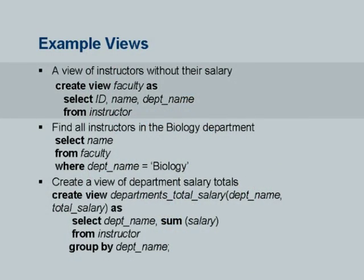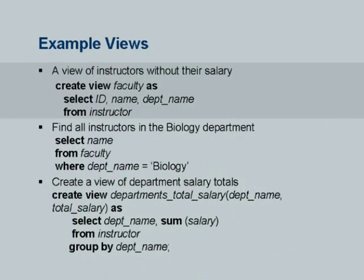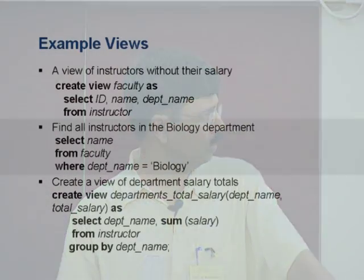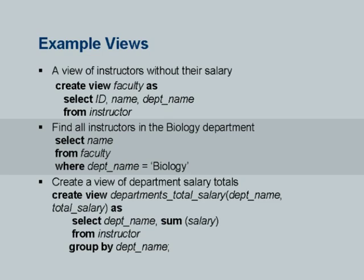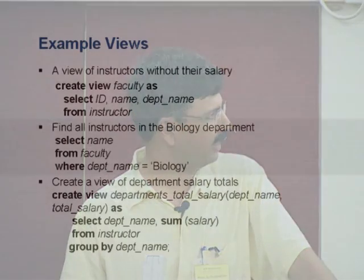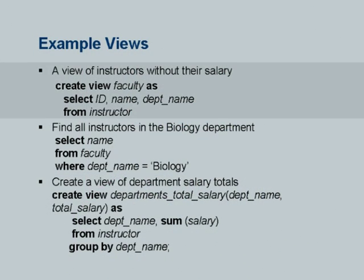Here is an example: CREATE VIEW faculty AS SELECT id, name, department_name FROM instructor. This view gives you instructor data minus the salary — useful when salary is sensitive information. Someone can then write SELECT name FROM faculty WHERE department_name = 'biology'. The database replaces this with the full expression and evaluates it. Another use of views is computing something complex and allowing reuse without rewriting — for example, computing total salary per department.